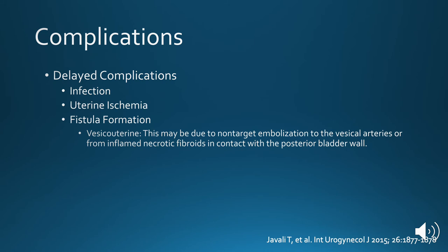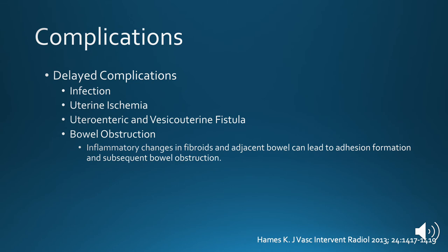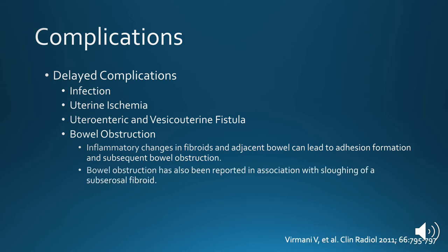Fistulas can form as well. This may include vesico-uterine fistulas, which may be due to non-target embolization to the vesicle arteries or from inflamed necrotic fibroids in contact with the posterior bladder wall. Utero-enteric fistulas have been reported as well, and may be associated with adhesions or from inflammation in the adjacent uterus. Bowel obstruction can occur and may be secondary to inflammatory changes in fibroids and adjacent bowel, leading to adhesion formation. Bowel obstruction has also been reported in association with sloughing of a subserosal fibroid.